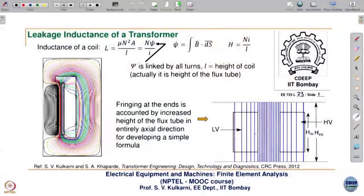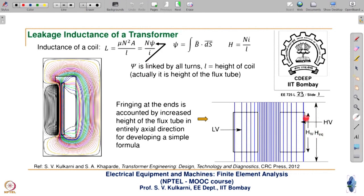The approximation we are making is that the flux is entirely axial. Effectively, the increase in the height of the flux tube at the end — because the flux is going beyond the physical height of the coils — is accounted for by some extra height H_equivalent, which is more than the height of the winding H_W.